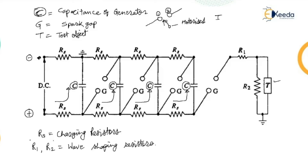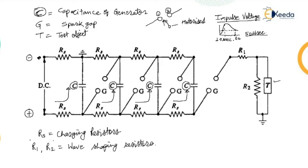Now we have to generate the impulse voltage. As discussed in the previous lecture, the basic impulse wave shape has a 50 percent attainment during discharge that needs a time period of 50 microseconds as per Indian standards. The charging time to reach the peak level is T1, which is 1.2 microseconds. The time required to reach the peak value is very small at 1.2 microseconds, while the discharging time is 50 microseconds — and that is only to 50 percent of the discharging voltage.